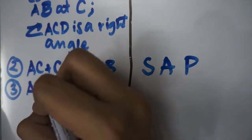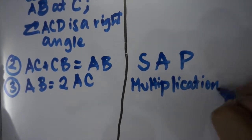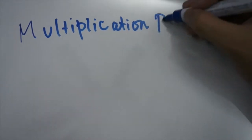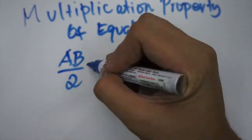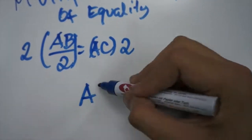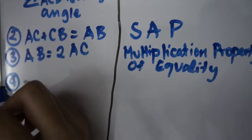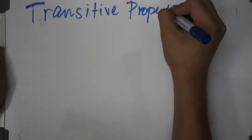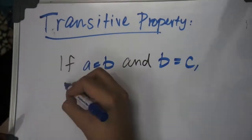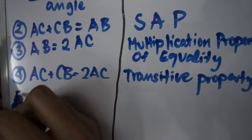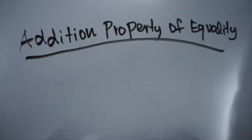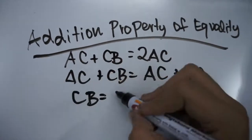Next, we can now state that AB equals 2AC. This is due to the multiplication property of equality, wherein we multiply both sides of the given AB over 2 equals AC to get the value of AB in terms of AC. After that, we can now state that AC plus CB equals 2AC, due to the transitive property wherein we can substitute a whole side of the equation for a term equal to it. Next, we can now state that CB equals AC. This is due to the subtraction property of equality, wherein we subtract the common value of AC from both sides of the previous equation.